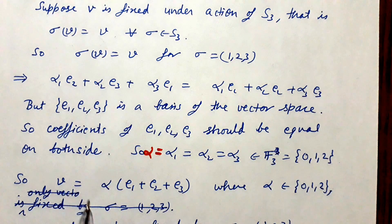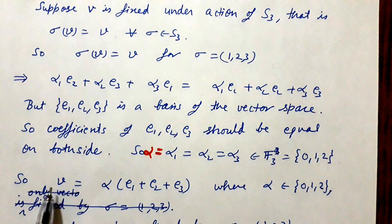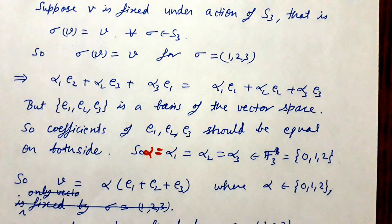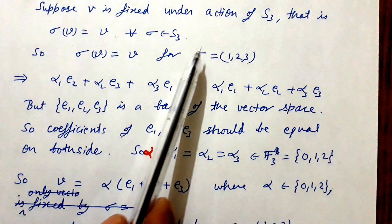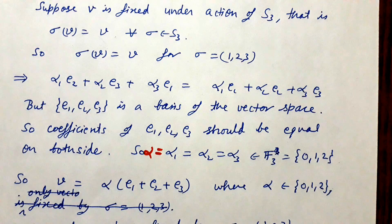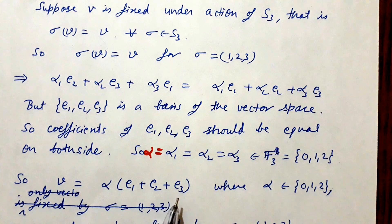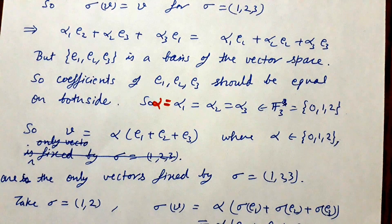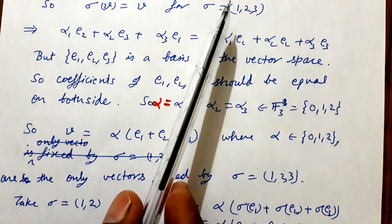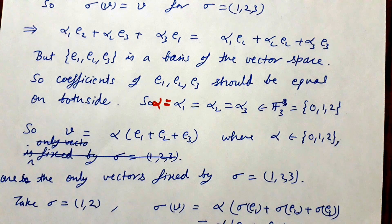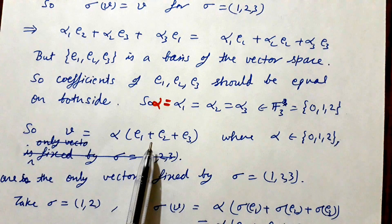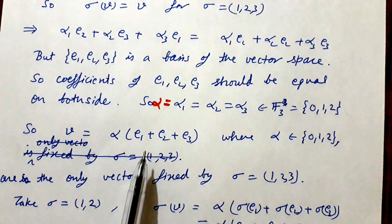So a vector V is fixed by sigma = (1 2 3) if and only if V = alpha*(E1 + E2 + E3) where alpha belongs to {0, 1, 2}. There are only three such vectors. We need to determine which of these are also fixed by all other elements of S3. Since any vector fixed by all elements must be fixed by this sigma, we only need to check these three vectors against the remaining elements.